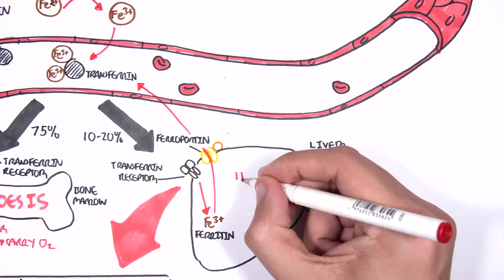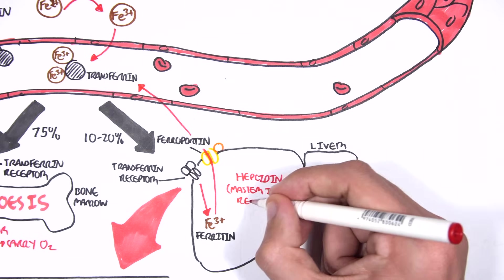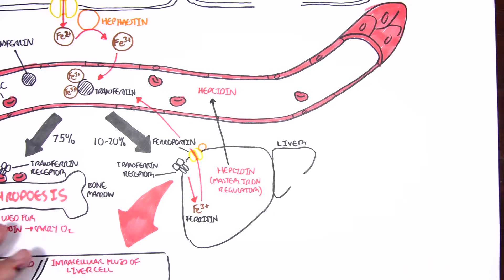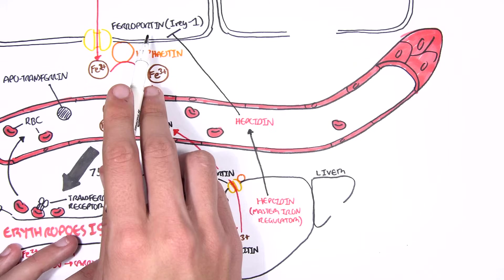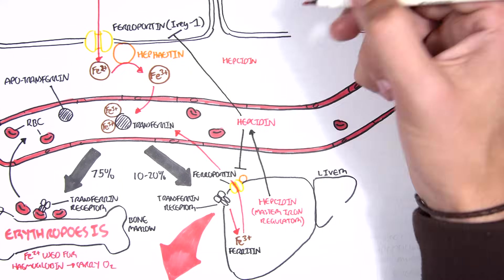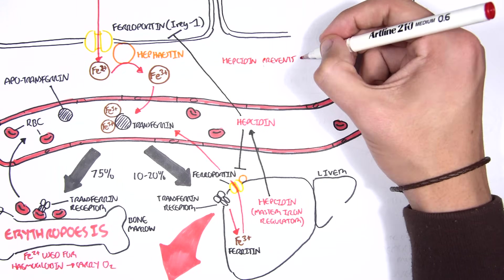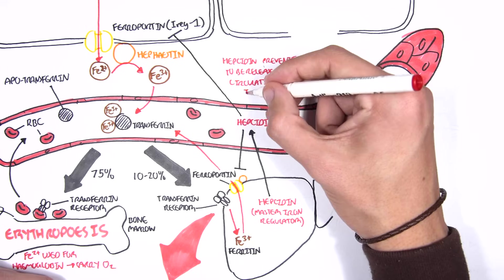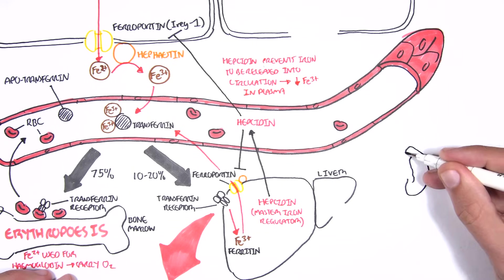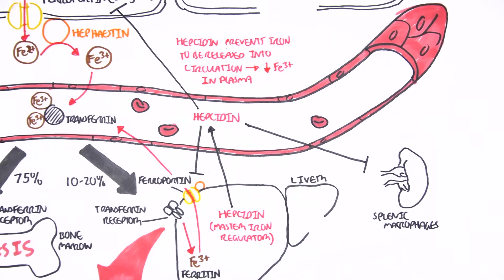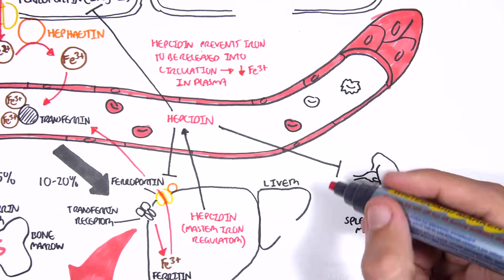Hepcidin is the master iron regulator, and is produced and secreted by the liver. Hepcidin enters circulation and has many functions. Its main function is to inhibit the function of ferroportin, which are the transporters that play a role in iron release into circulation. So, hepcidin prevents iron from being released into circulation, and therefore, its main goal is to decrease plasma iron concentrations. Hepcidin also functions on the spleen macrophages. Why is this? Well, if we zoom into the spleen, we know that the spleen contains many macrophages.